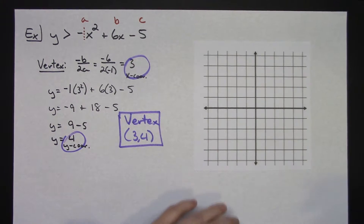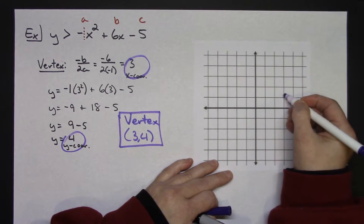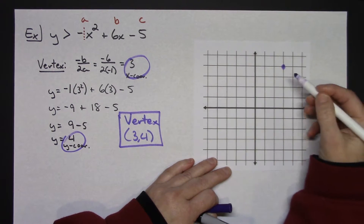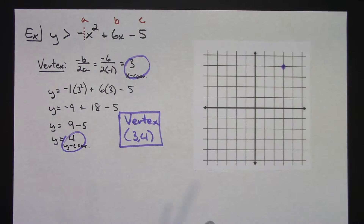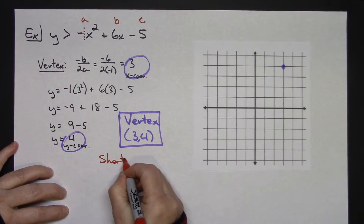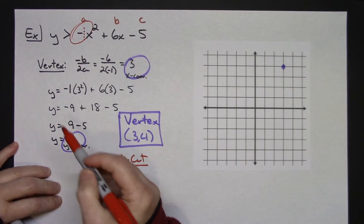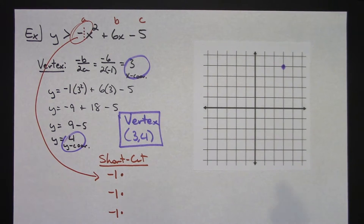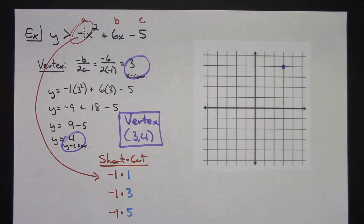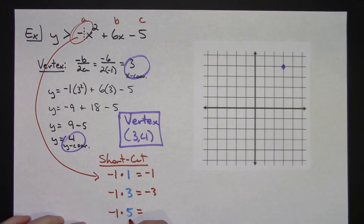The vertex at (3, 4) is the first point I put on my graph. Now for the shortcut method — you don't have to create an XY table. Take your leading coefficient a, which was negative 1, and write it down 3 times. The 3 magic numbers for every quadratic are 1, 3, and 5. Multiply: negative 1 times 1 is negative 1, negative 1 times 3 is negative 3, negative 1 times 5 is negative 5. This tells me I'm going to go down.